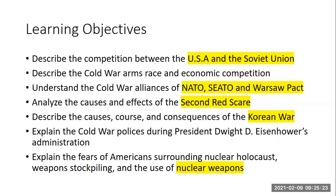Because the Soviet Union is a communist state, and the United States has a history of being terribly afraid of communism, we enter another second Red Scare. We're going to get involved in a military conflict in Korea to stop the spread of communism. We're going to look at our second Cold War president, Dwight D. Eisenhower. He's president after Harry Truman. And we'll look at American fears surrounding nuclear holocaust.